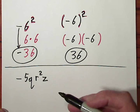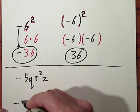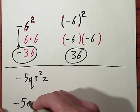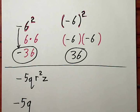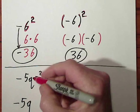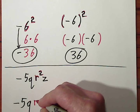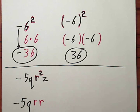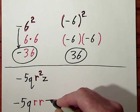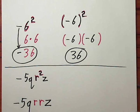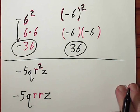So in this case, what we have is r to the second power, so we have -5qrrz.